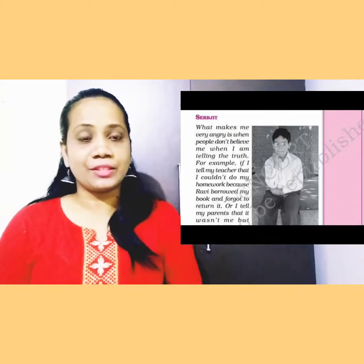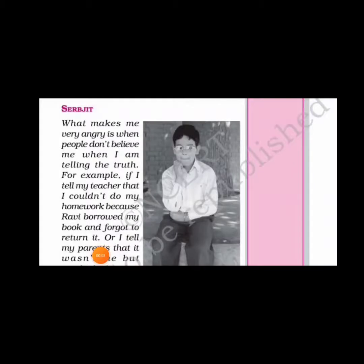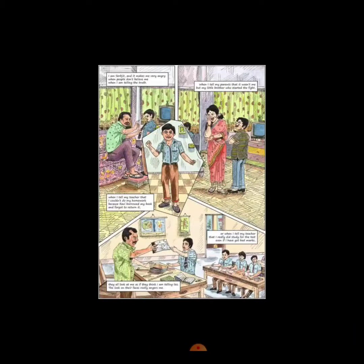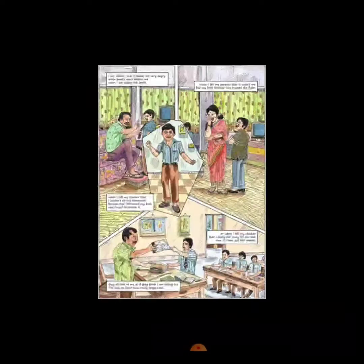Next is Sabjid. Sabjid gets very angry when people don't believe he is telling the truth. When he tells his teacher that he could not do his homework, that someone borrowed his notebook, or that though he studied, he did not fare well in the exams, his teachers don't believe him. Even his parents don't believe him when he says it was his brother who started the fight. Sabjid gets very angry looking at the expressions on their faces. Often he has to look down and count to 10, which stops him from showing that he is angry.